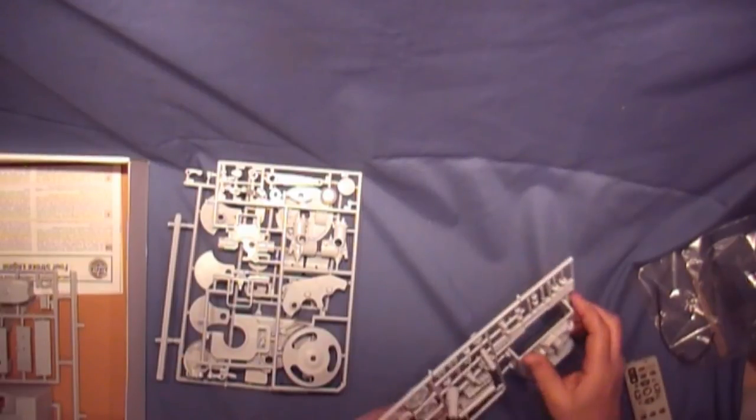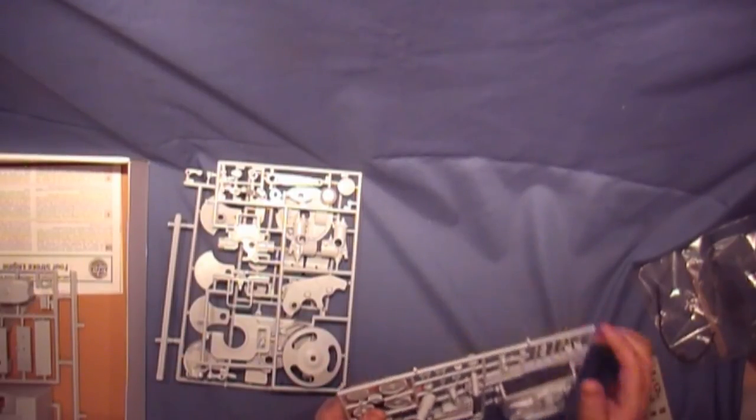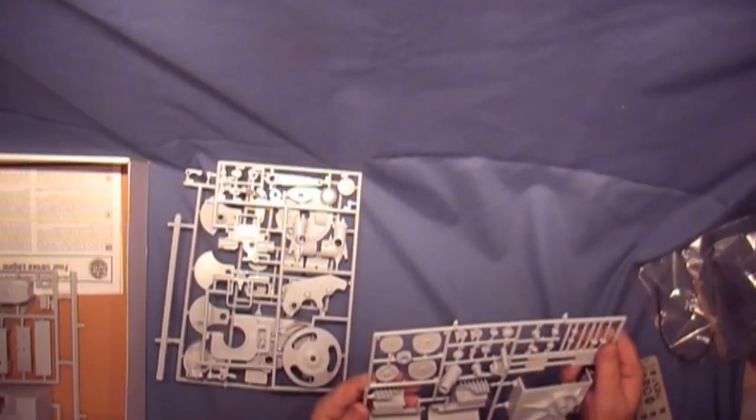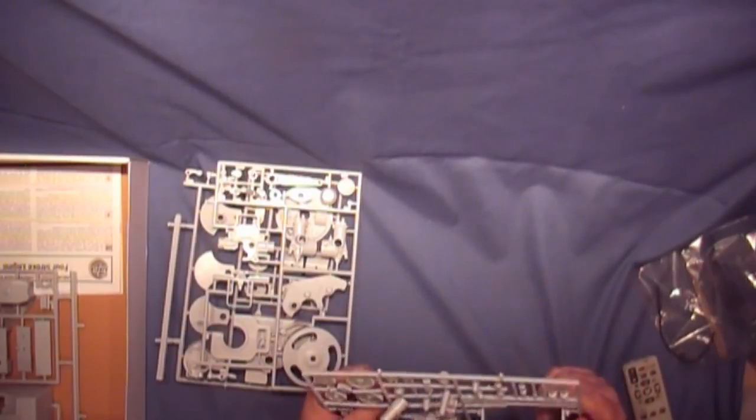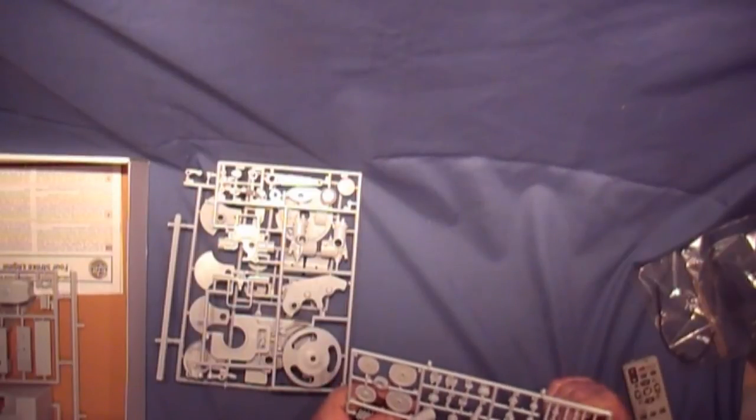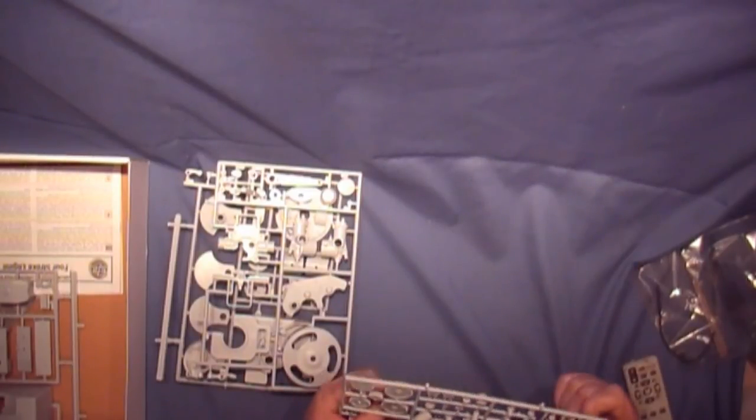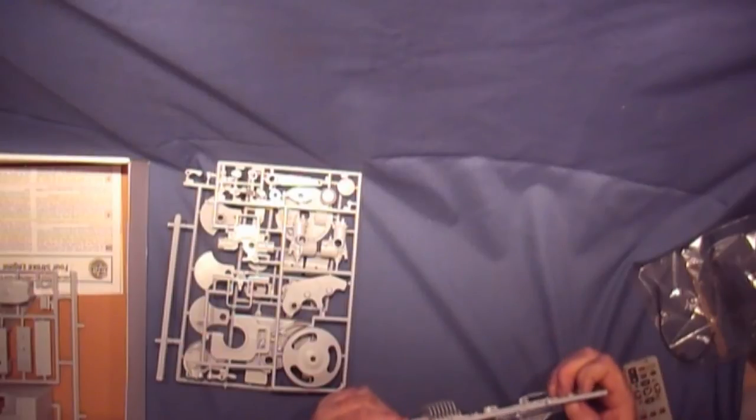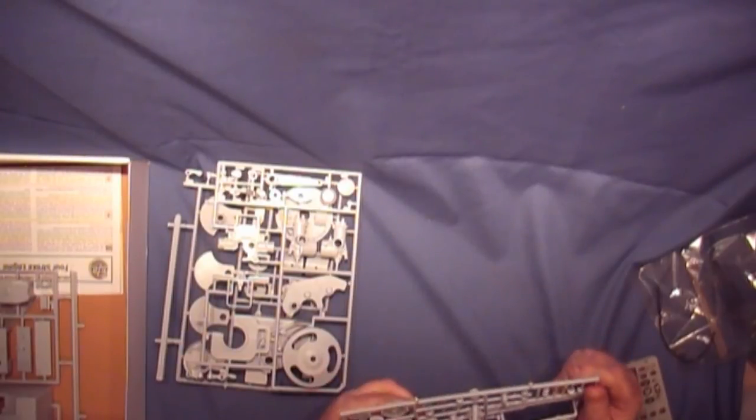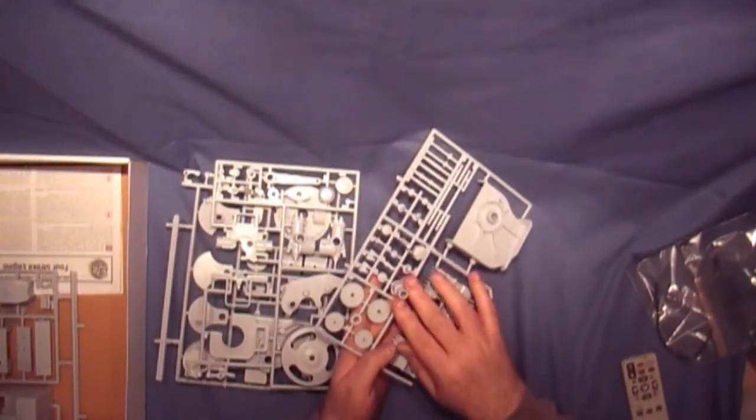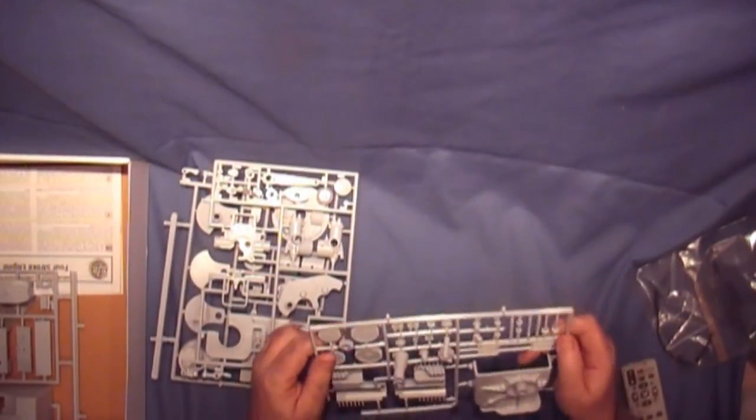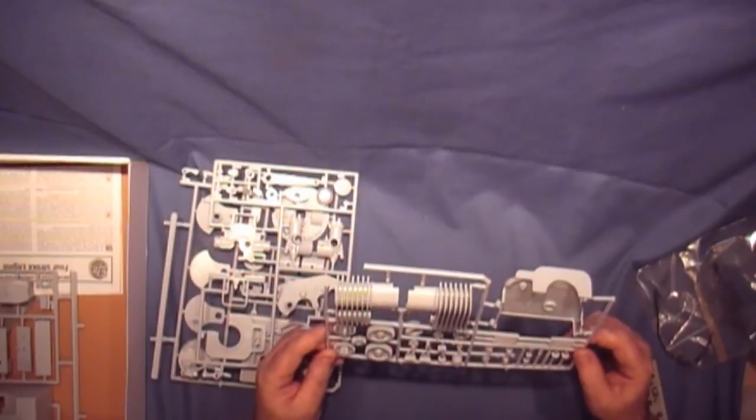All the gears look to be in good condition, there's no flash on those at all so they should go together nicely. And the cylinder as well. Some of the rods and valves have got mold line on them, they'll have to be taken off to get it to run nicely. There's the on-off switch just here on this one. Nice detail.